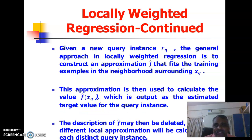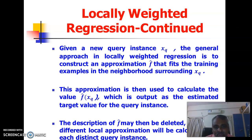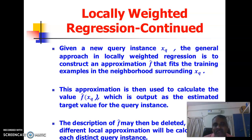Given a new query instance x_q, the general approach in locally weighted regression is to construct an approximation function f-cap that fits the training examples in the neighborhood surrounding x_q. This approximation is then used to calculate f-cap of x_q, which is output as the estimated target value. This function is related only to the particular query point — if the query point changes, the function will also change, and the previous f-cap will be deleted.